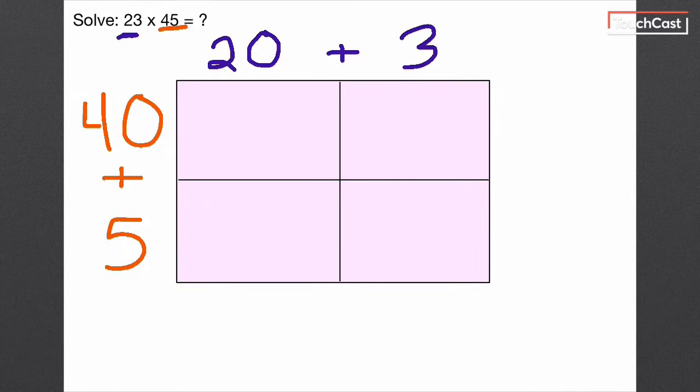So thinking about an area model, we know we multiply inside of the boxes. So the very first thing I'm going to do is focus on this first box right here. If we're doing our 2-by-1 multiplication, we know that we're going to take this number and multiply it by the top number. So let's go ahead and do that.